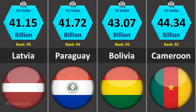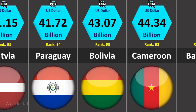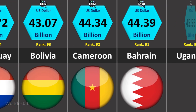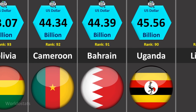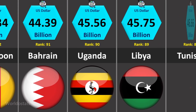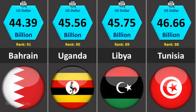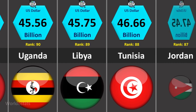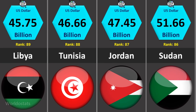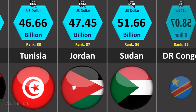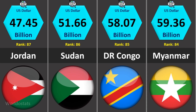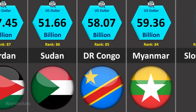But what exactly is GDP? In simple terms, GDP represents the total monetary value of all goods and services produced within a country's borders in a specific time period, usually a year. It's like adding up everything a country makes, from cars to software to crops, to get a snapshot of its economic size.